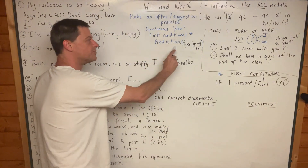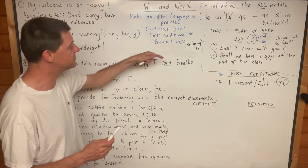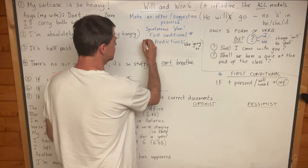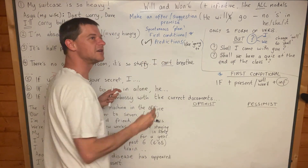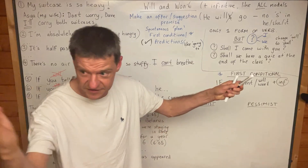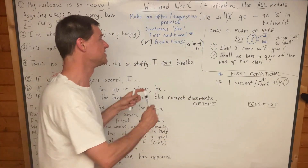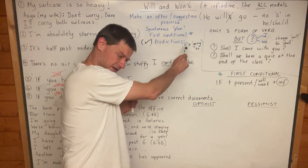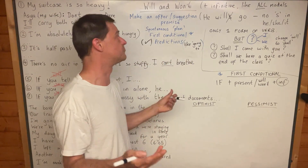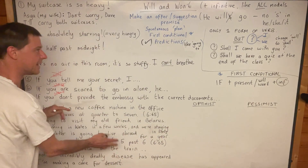Going to is also for predictions, but you can use will and won't for predictions as well — general predictions, not predictions based on current evidence around you. If you can see a reason for your prediction, you should use going to. If you can't see a reason or you're just making a general prediction, you can use will and won't, and we'll see that at the bottom.